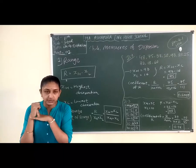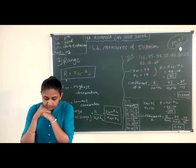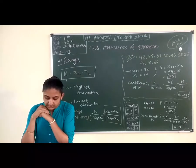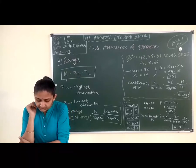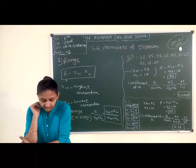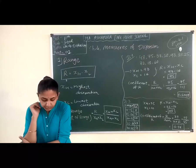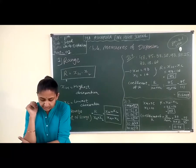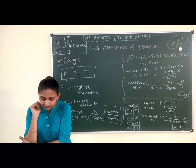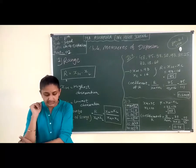Let's solve illustration number 1. The runs scored by a batsman in his last innings of a cricket match are 48, 75, 37, 52, 93, 81, 25, 72, 18, and 60. Find the range and the coefficient of range of the runs scored.